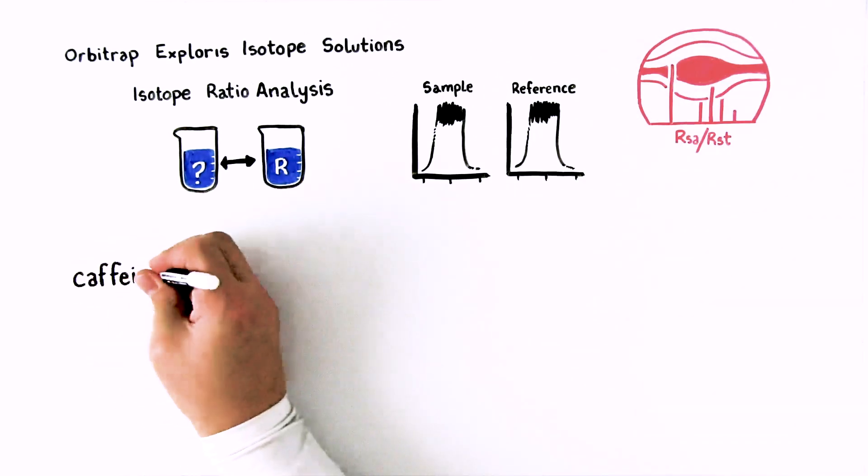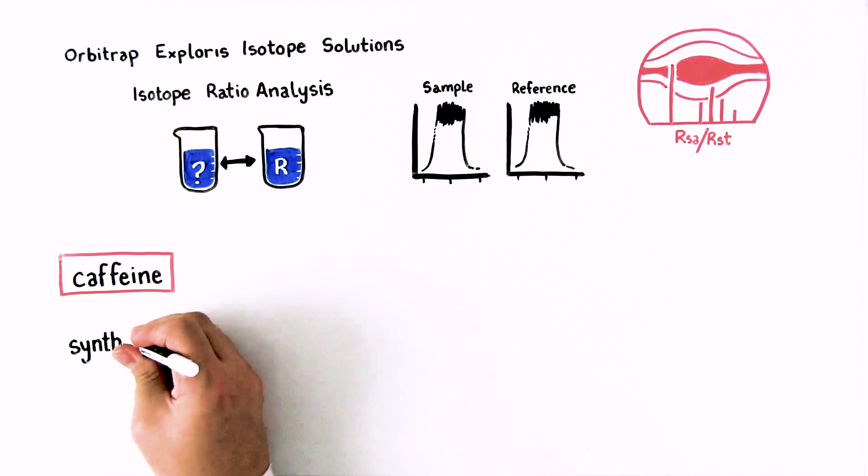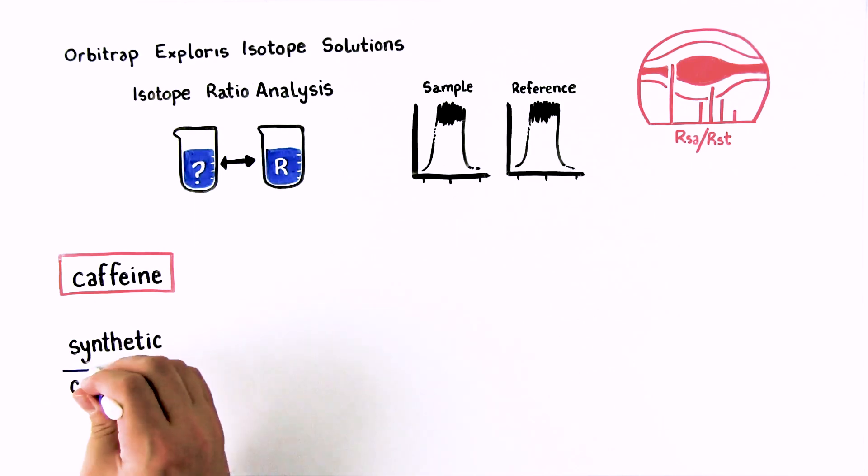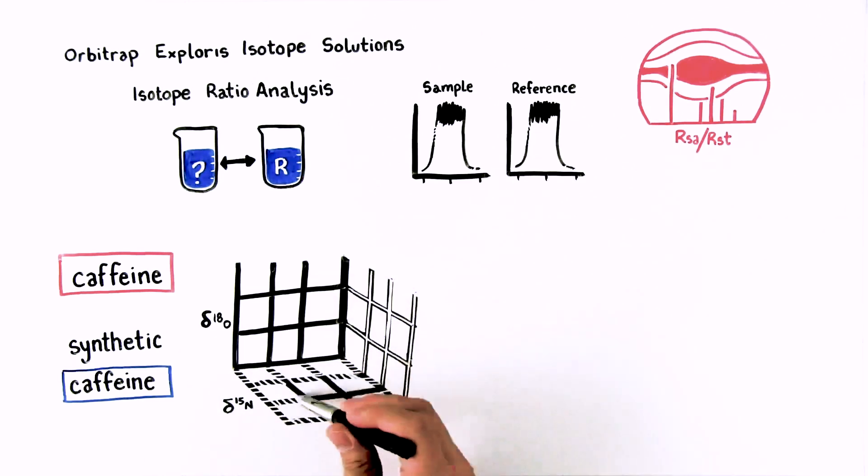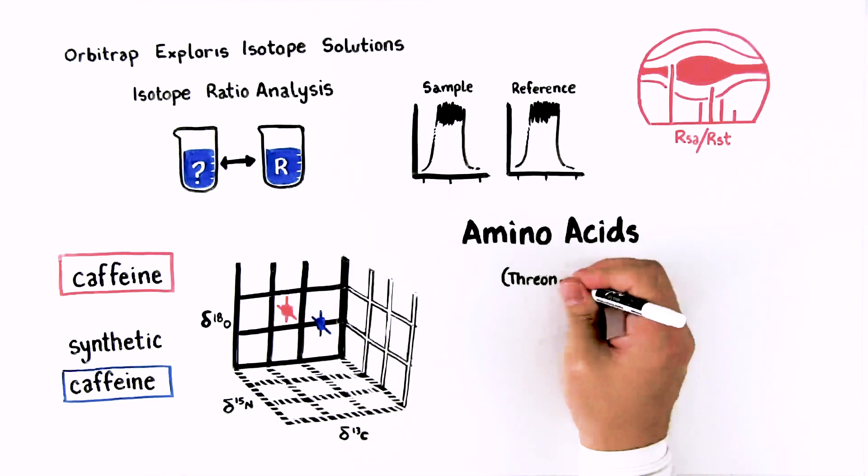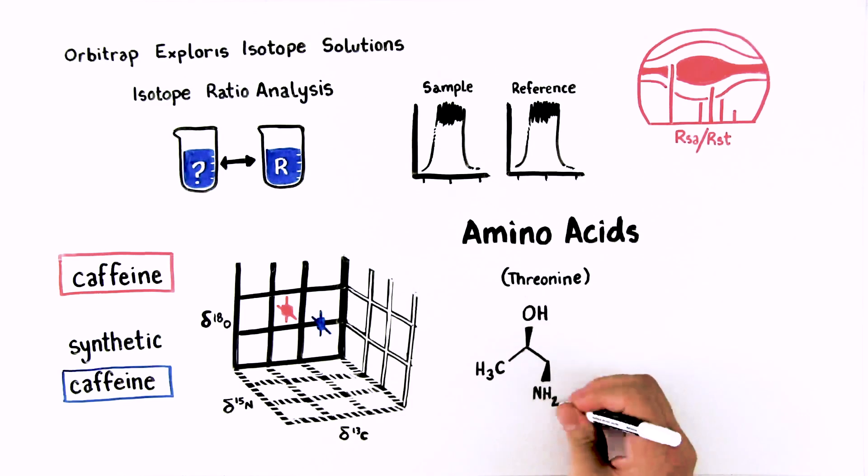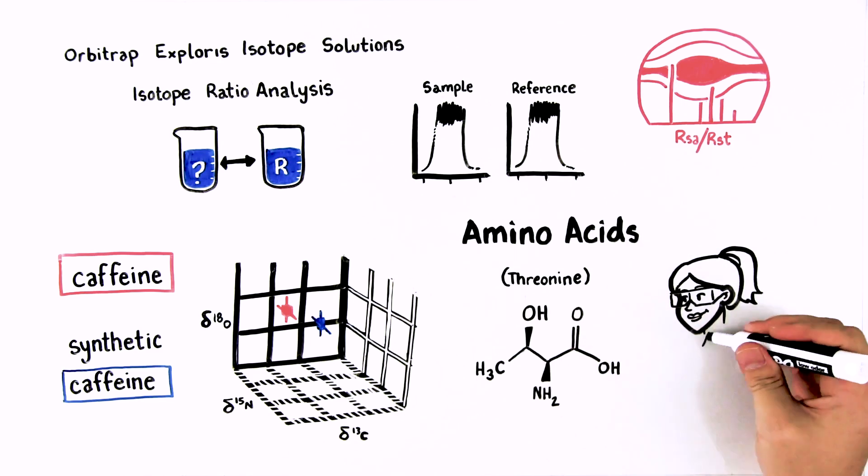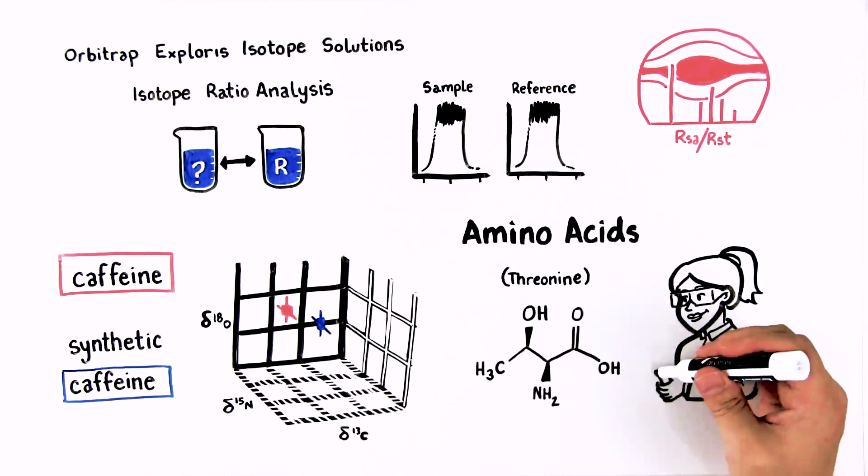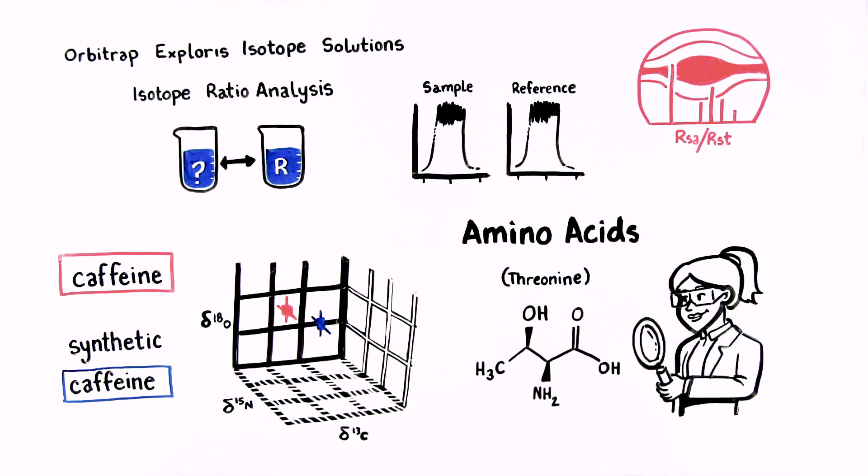For compounds such as caffeine, we can use this technique to readily differentiate synthetic caffeine from natural caffeine in 3D or even 4D isotope space. For more complex molecules, such as amino acids, we can start to determine the isotopic composition of each of the functional groups, providing information on the processes associated with the formation of those molecules.